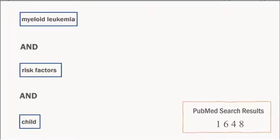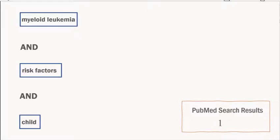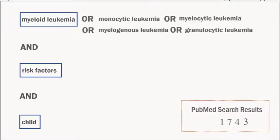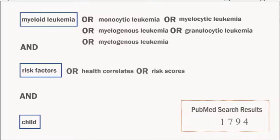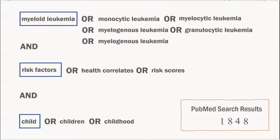The Boolean operator OR instructs the database to find articles that include any concepts within a search string. The more concepts you add to the string, the more results you get. OR is used to connect synonyms or similar terms to increase the number of search results.